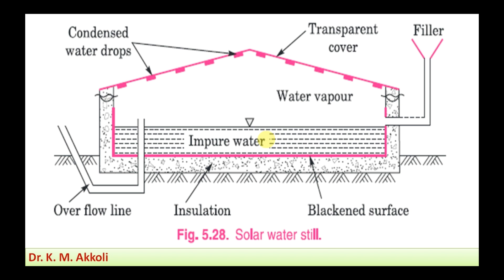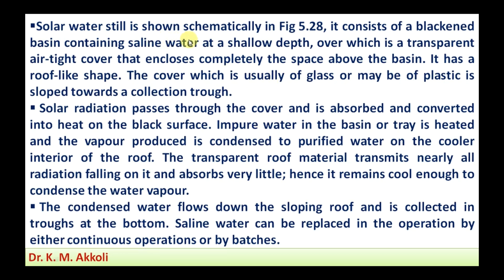In this way, the conversion of impure water into pure water is carried out using solar energy or solar heat. The solar water still is shown schematically in figure 5.28. It consists of a blackened basin containing saline water at a shallow depth, over which a transparent airtight cover encloses the complete space above the basin. The cover has a roof-like shape and is usually made of glass or plastic, and is sloped towards the collection trough.